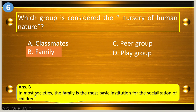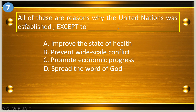In most societies, the family is the most basic institution for the socialization of children. Number seven: all of these are reasons why the United Nations was established except to blank. A, improve the state of health; B, prevent wide-scale conflict; C, promote economic progress; and D, spread the word of God. The answer is letter D, spread the word of God.